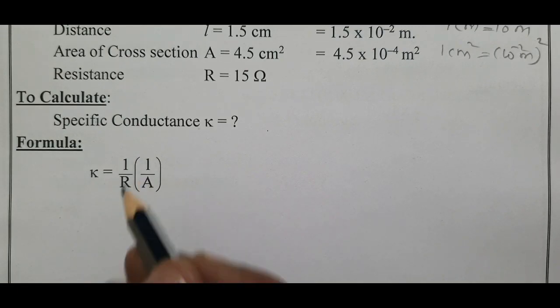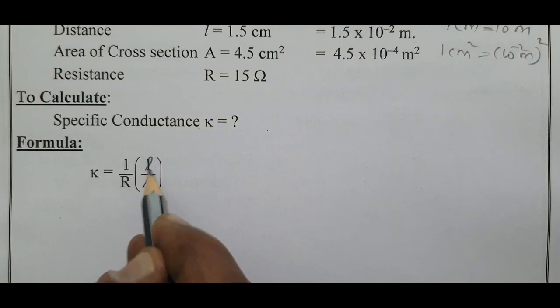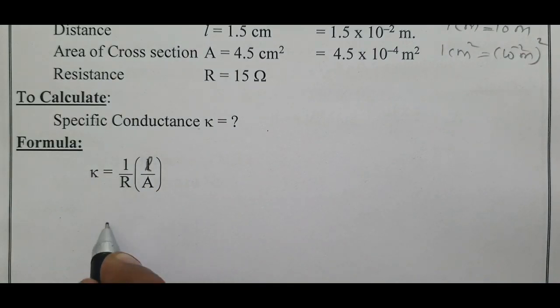We know L by A is cell constant. Now, substitute the values first. Kappa equals 1 by R. R value is 15 ohm.